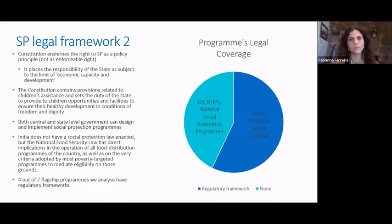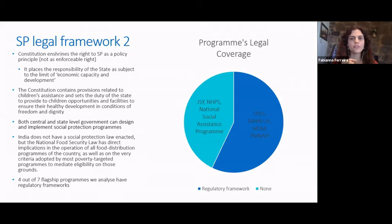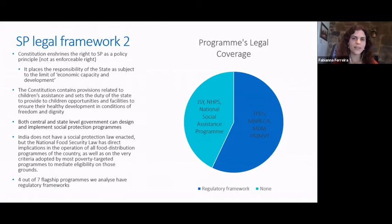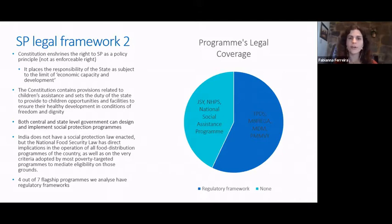Looking carefully at India's Constitution, it contemplates social protection only as a policy principle, not as an enforceable right. India, defined as a union of states, places social security and social insurance within the concurrent list, meaning both central and state governments can design and implement social protection programs. However, as an overarching framework is lacking, the range and nature of policies can vary greatly, resulting in a very high number of diverse social protection schemes at central, state, and local levels. The analysis is based on seven national flagship programs — subnational initiatives are not in the sample.